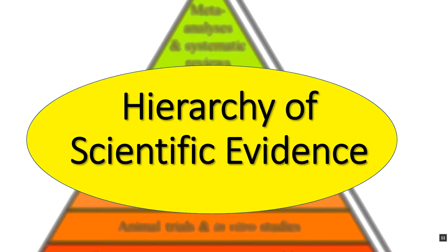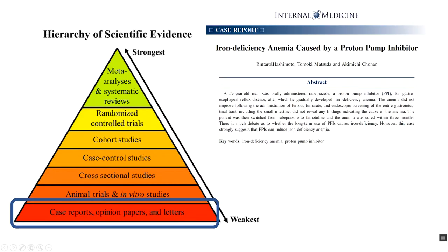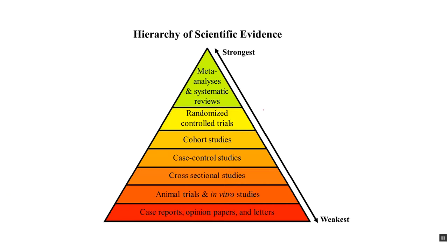I'd like to talk a little bit more about the hierarchy of scientific evidence. It's going from stronger types of scientific evidence to weaker types of scientific evidence. I got this hierarchy from a website about medicine, and it's a pretty standard hierarchy we have in sciences, so it's worth talking about how these different levels translate into psychology and psychological research.